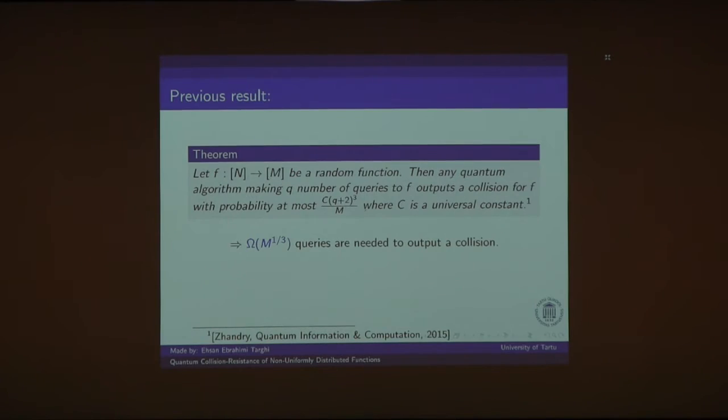And in the quantum case, probably we need more queries. And Zandri has a theorem for random functions. And he proves that when f is a random function, then any quantum adversary making q queries will output a collision with probability q cubed over m. So this means that omega cube root of m is a lower bound for the number of queries to output a collision.